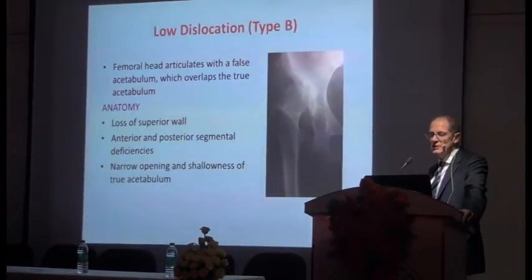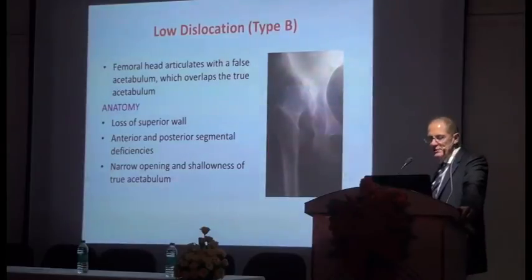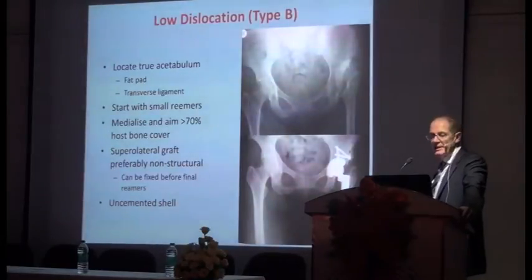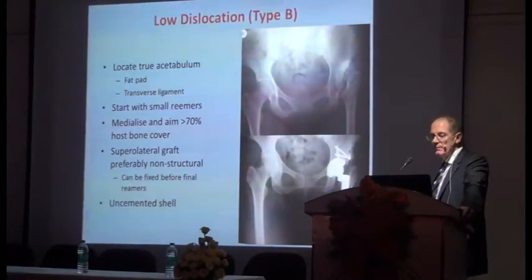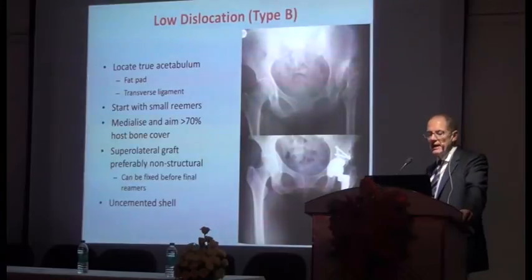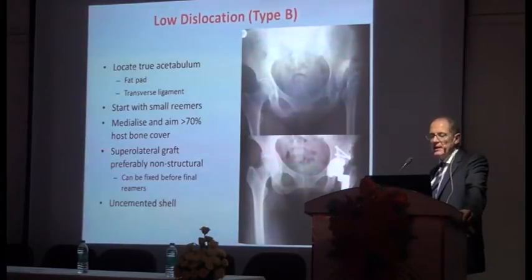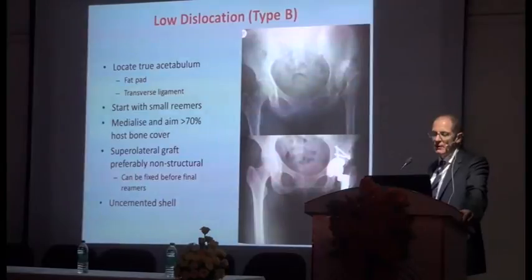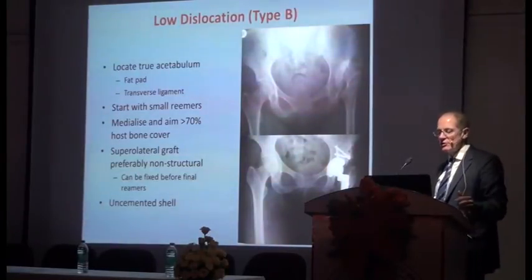Type B is a low dislocation with overlapping acetabulum. The femoral head articulates with the false acetabulum, which overlaps the true acetabulum. In this situation you've lost the superior wall, you've got anterior and posterior segmental deficiencies, and a narrow and shallow true acetabulum. The technique is again to first locate the true acetabulum by breaching the floor osteophyte, identify the fat pad and transverse ligament, start with small reamers, aim to medialise to get at least 70% host bone cover, and then use a superolateral graft which — if possible — should be non-structural. If you're relying on structural graft you'll probably need to move to a cage, which in most situations should not be necessary.